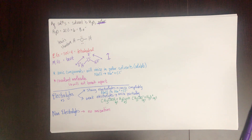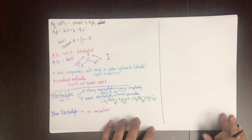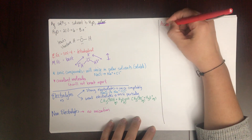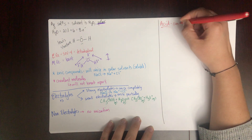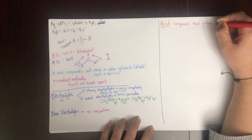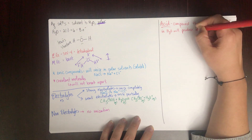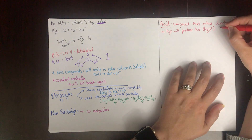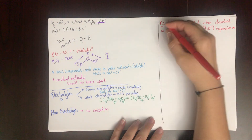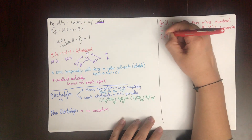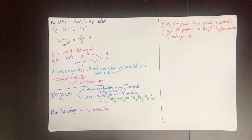Now let's talk about acids and bases, which are examples of electrolytes that break apart in water. An acid is defined as a compound that, when dissolved in water, will produce the hydronium ion (H₃O⁺). In biology, you might hear that an acid produces the hydrogen ion (H⁺) — the hydronium ion and the hydrogen ion essentially represent the same thing.